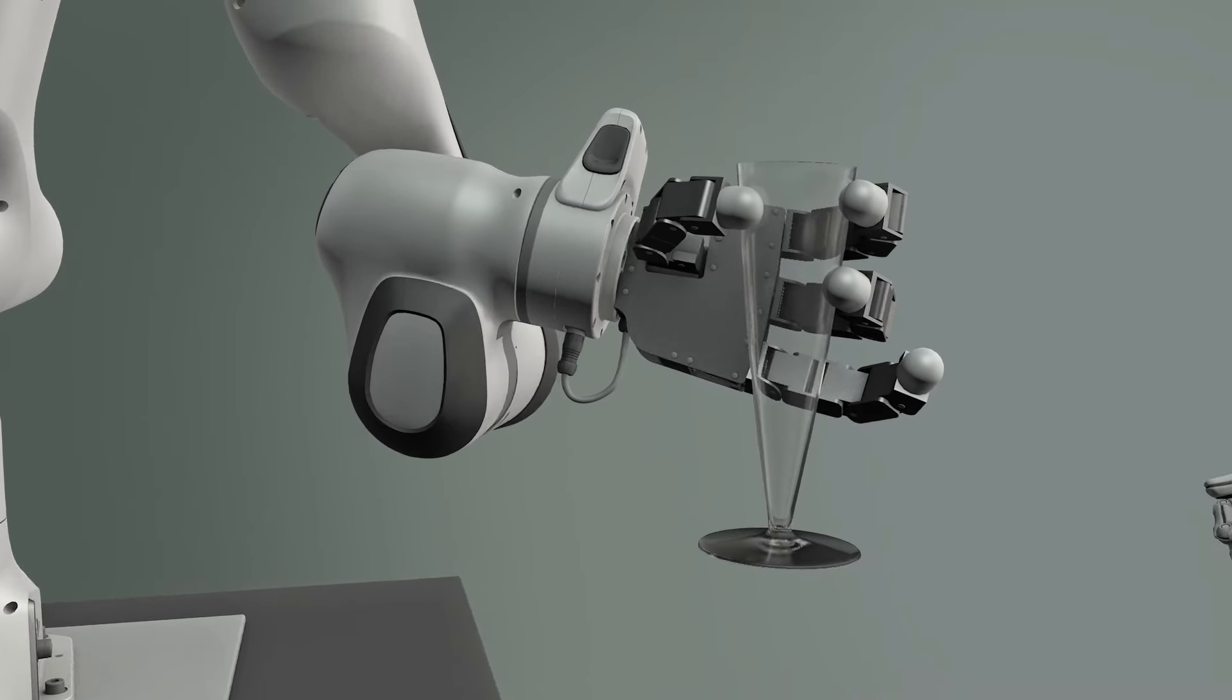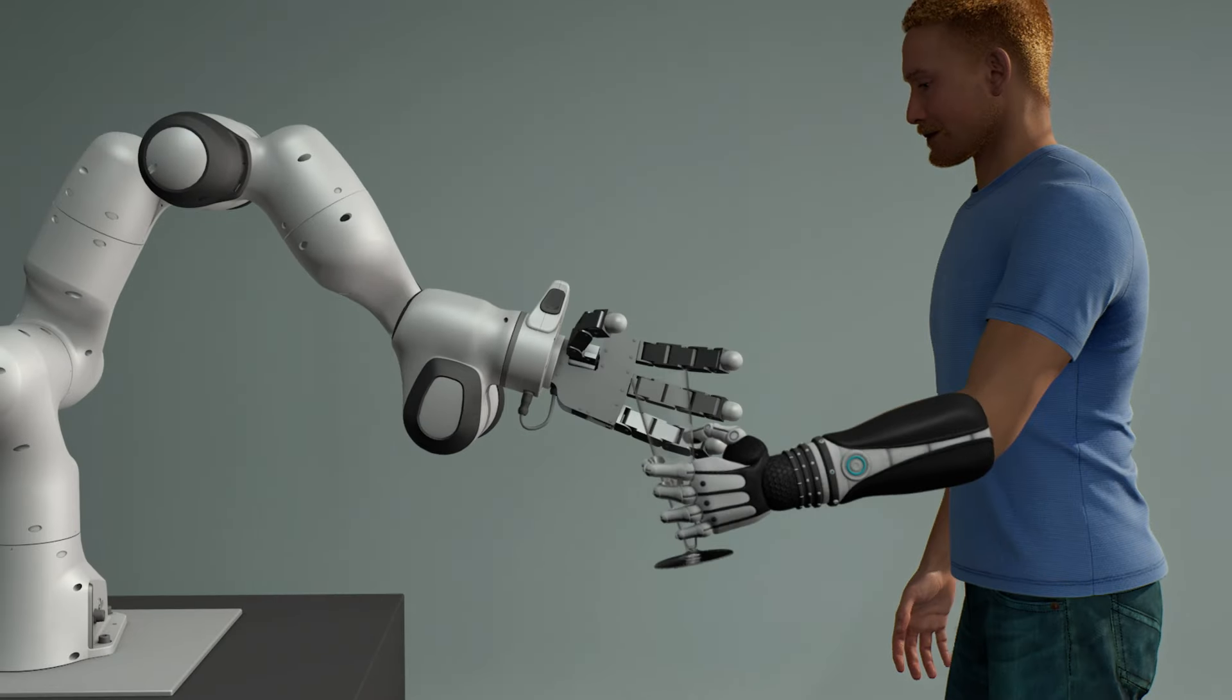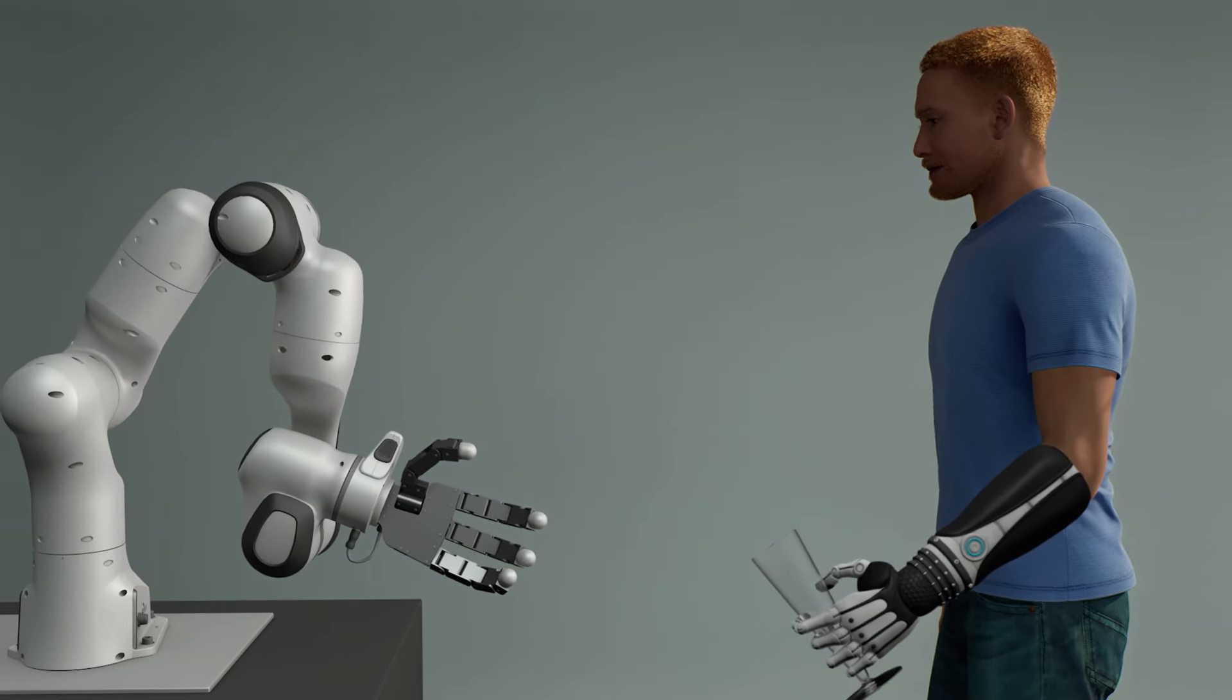Dynamical systems can also be easily modulated to avoid obstacles that appear in the environment. This makes obstacle avoidance straightforward in 2 or 3D space.